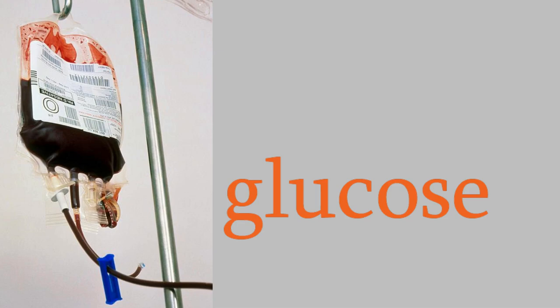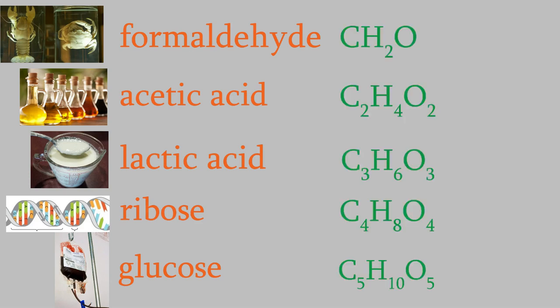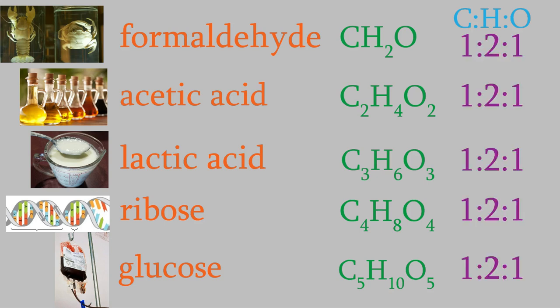You can see that these five compounds are all very different from each other. Formaldehyde and glucose certainly don't have much in common. But if you look at the molecular formulas of these compounds, you'll notice that they do share a connection. First, the compounds all contain just carbon, hydrogen, and oxygen. But more importantly for us, all of them have their carbon, hydrogen, and oxygen in the same ratio. One carbon to two hydrogens to one oxygen.